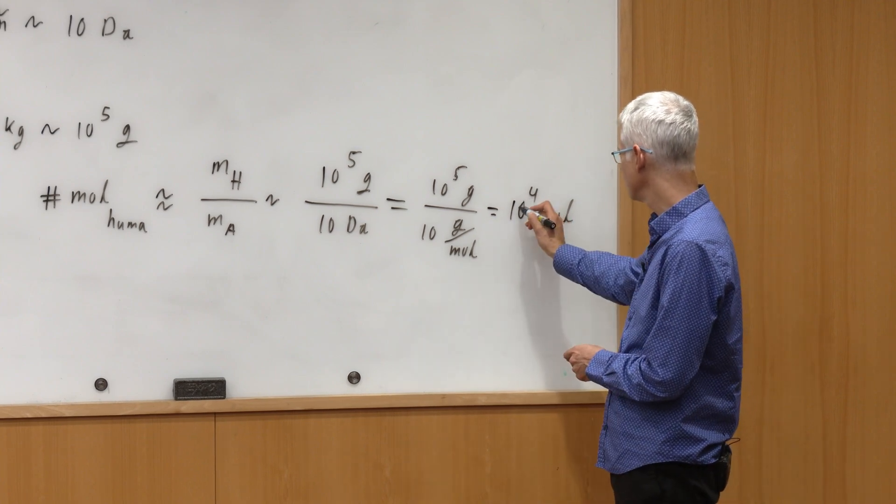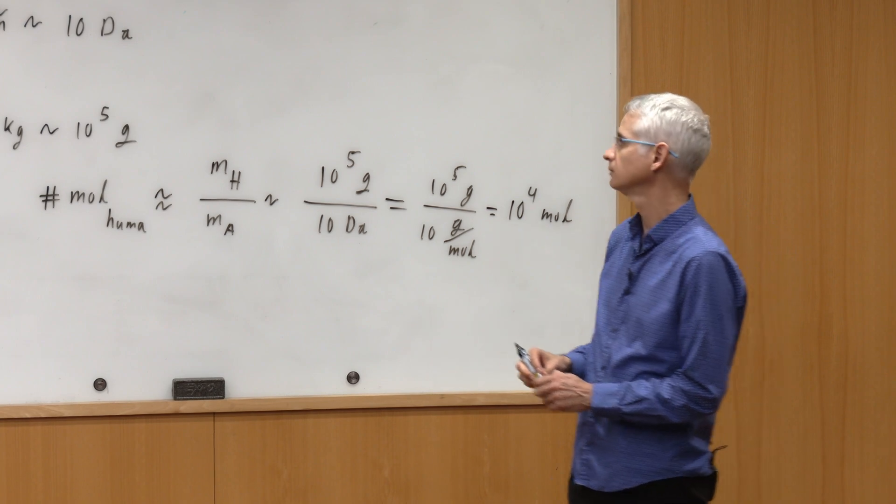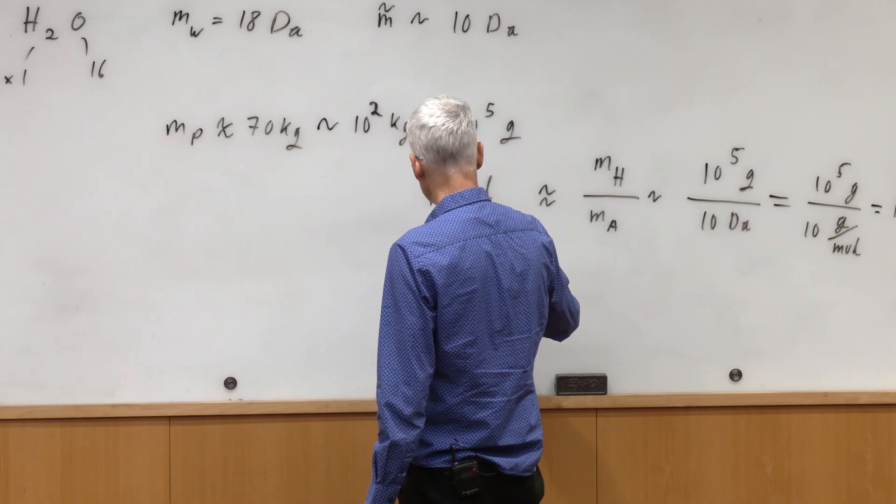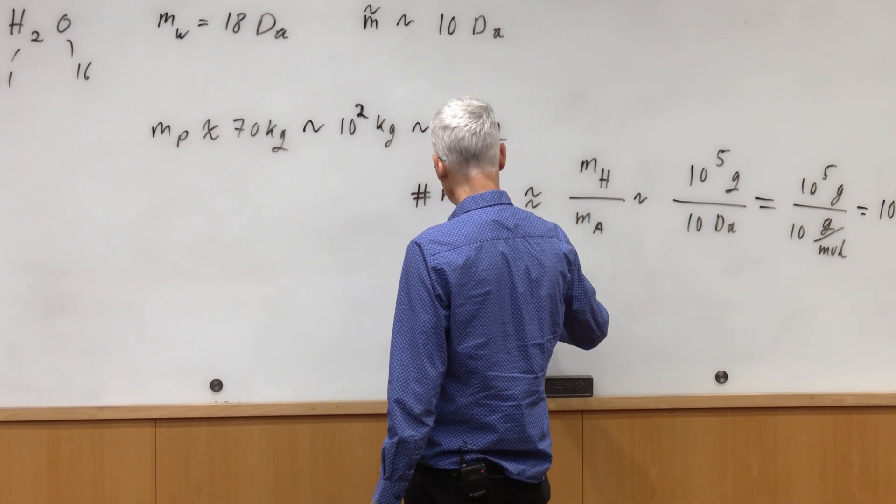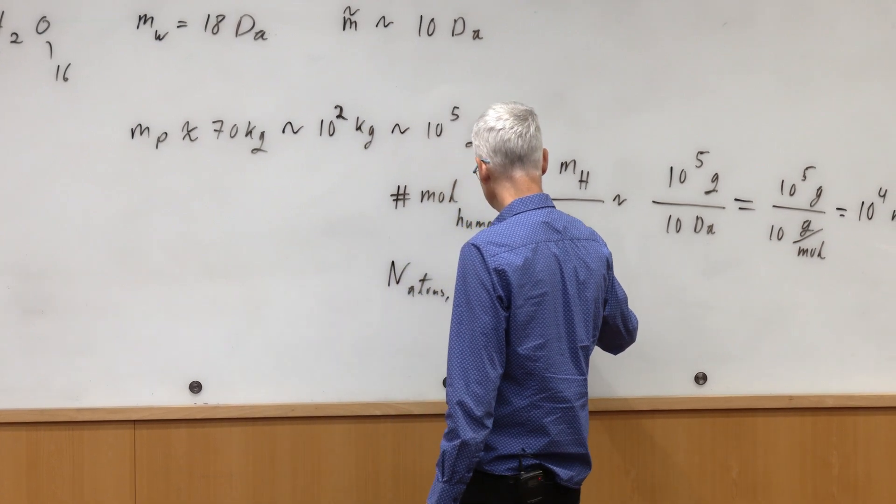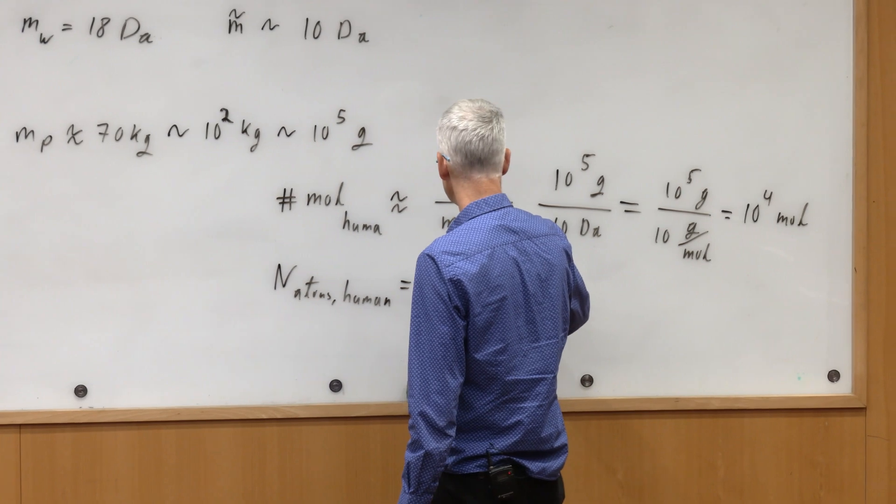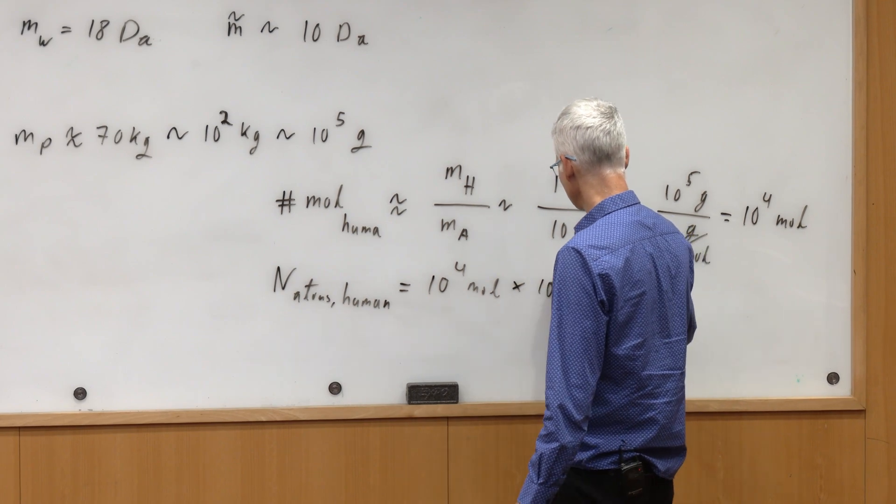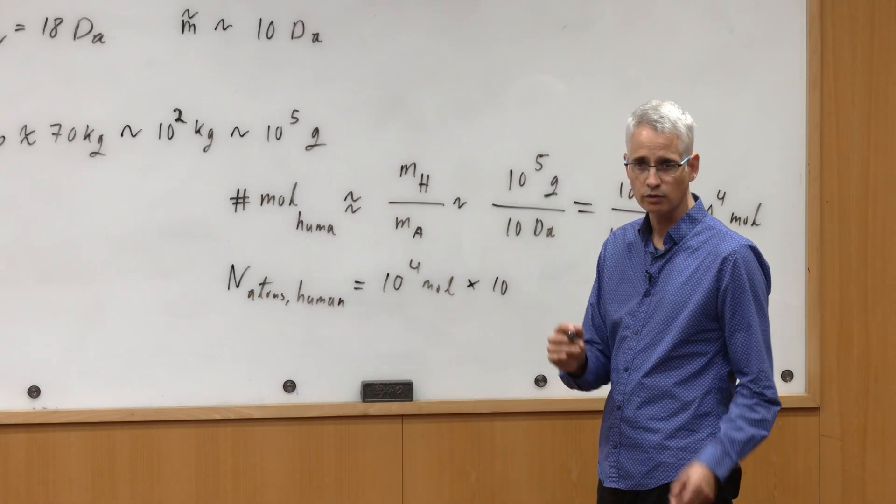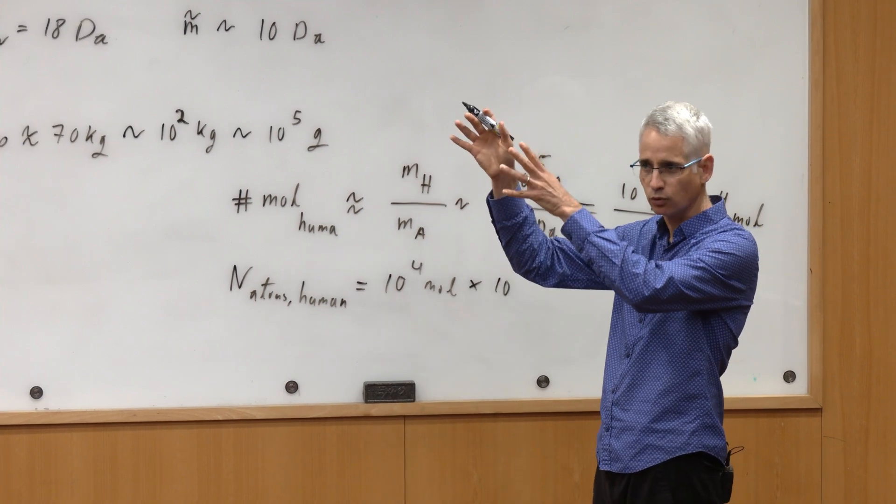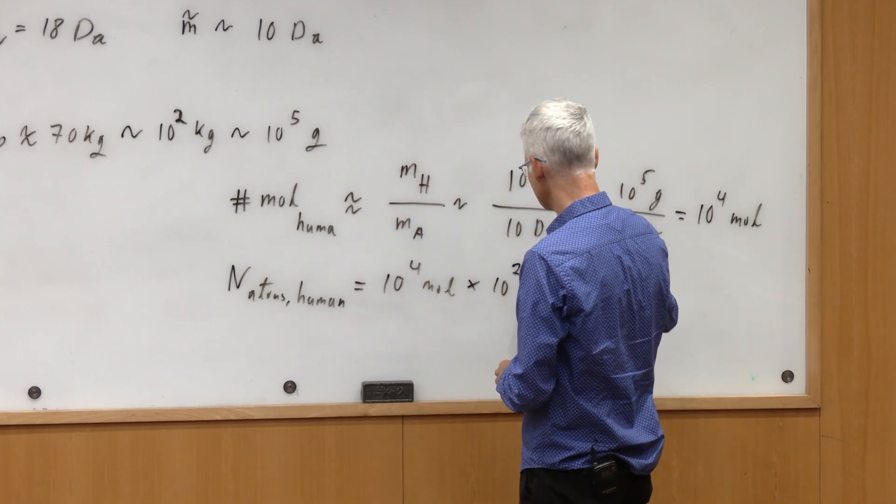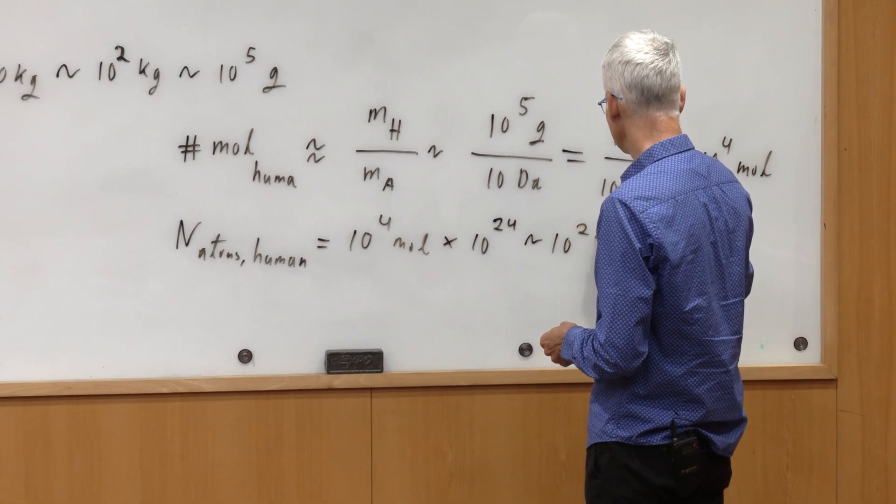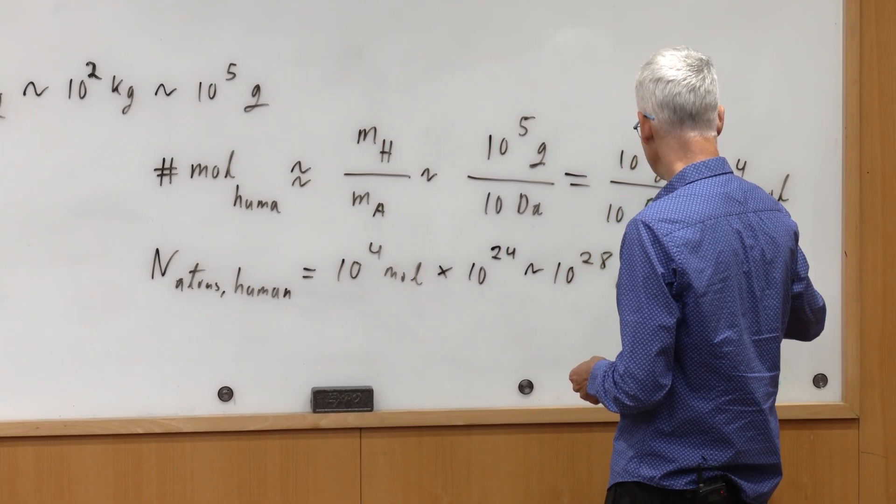What does that mean about the number of atoms in the human? That's 10 to the 4 moles times the number of atoms in the mole. You might remember it, how much is that? This is 6 times 10 to the 23, which we agree that at least for our course it's good enough to think about as 10 to the 24. And therefore each one of us is about 10 to the 28 atoms.